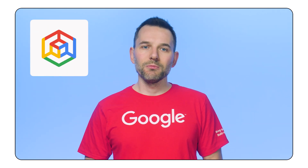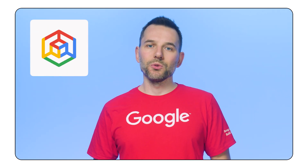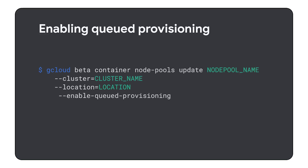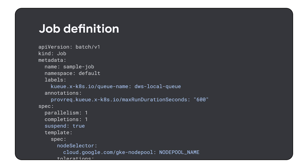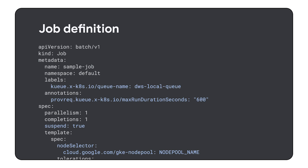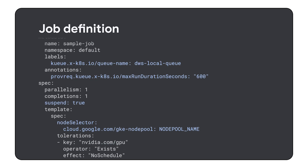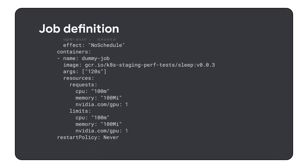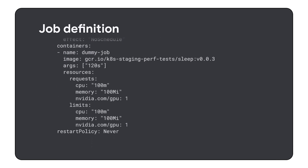Kubernetes Engine is one of the most popular solutions when it comes to AI-related workloads. You can enable Dynamic Workload Scheduler for some of your Kubernetes node pools by using the EnableQueuedProvisioning flag. Then, you can schedule Kubernetes jobs to run on the node pools provisioned by DWS. It is important that you specify the maximum runtime for those jobs, as having this information enables DWS to manage its scheduling.